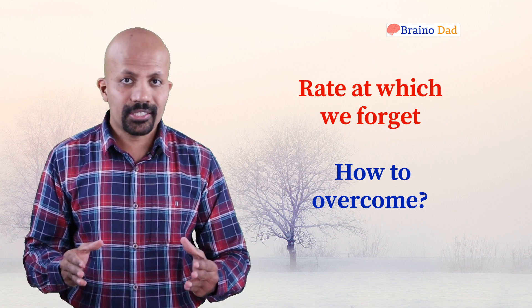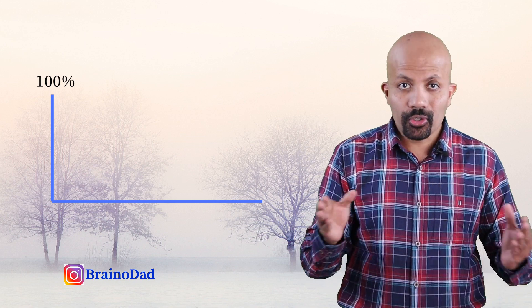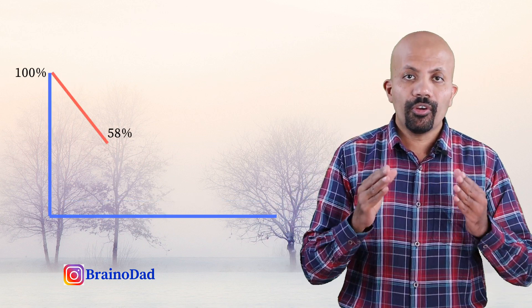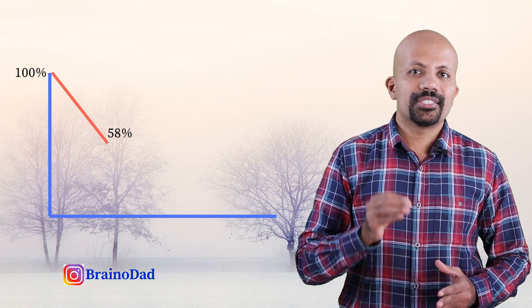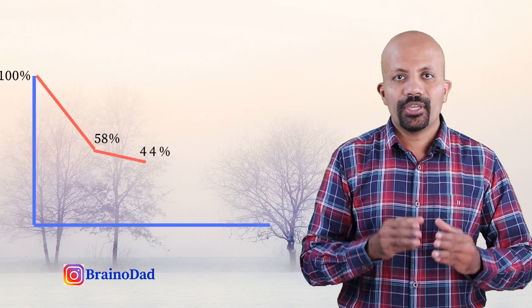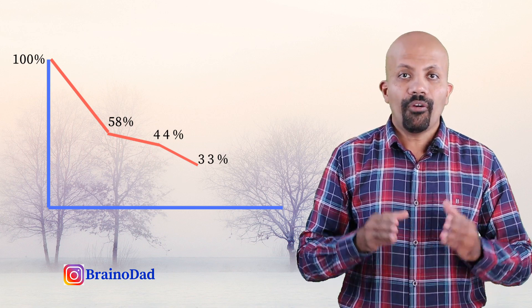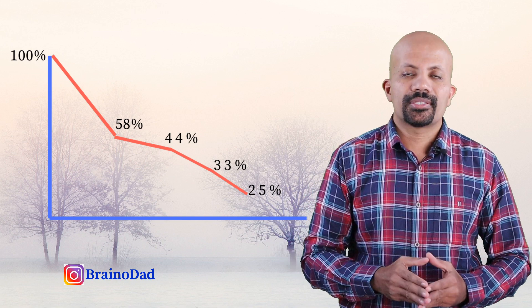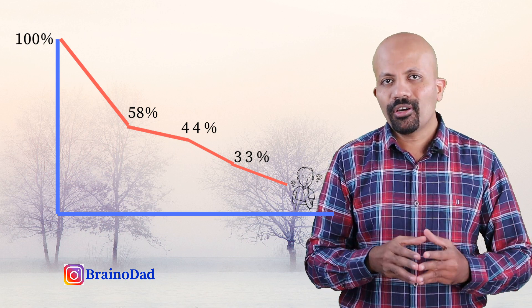Let us assume you learned and memorized 100 words today. If you try to recall soon after learning, you will be able to remember most of them. But after some time, your recalling rate reduces gradually. After an hour, you will be able to remember on average only 58 words — meaning you have forgotten 42 words in just one hour. After 9 hours, you can recall just 44% of the words. After a day, you can recall just 33 words. After a week, the number reduces to just 25 words. After a month's time, you will be able to recall only 21 words. This is called the forgetting curve.